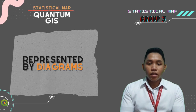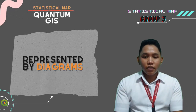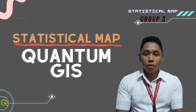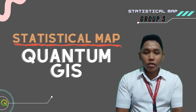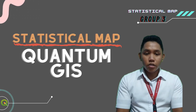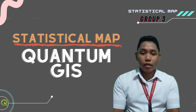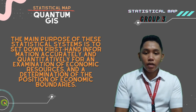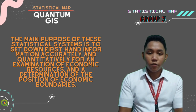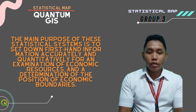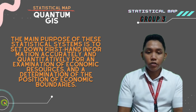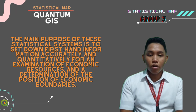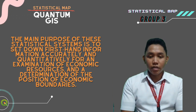Statistics may be represented by diagrams such as circles. There is usually no need for a base map, though such circles are often placed on a map to indicate their general geographical distribution. Such maps are mainly diagrammatic rather than true statistical maps. The main purpose of these statistical systems is to set down first-hand information accurately and quantitatively, for an examination of economic resources and determination of economic boundaries.